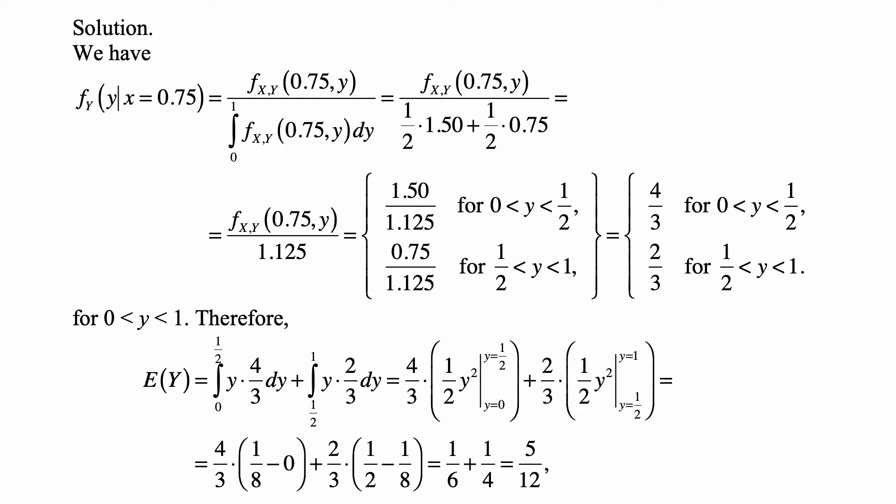We have the marginal density f_Y|X(y|x=0.75) equal to the joint f_XY(0.75,y) divided by the marginal f_X(0.75).